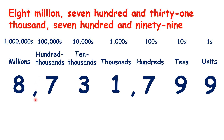Because if we have two commas in a number, we can say the number — so 8 — then say million. Then we can say the number — so 731 — and say thousand. And then we can say the number, so 799. Putting that together, we have 8,731,799.